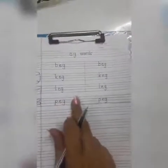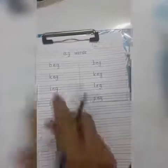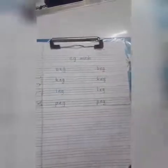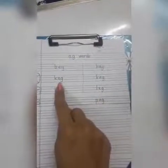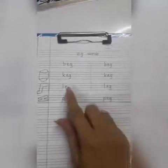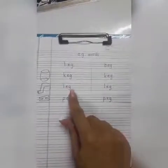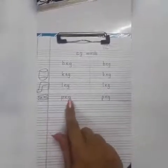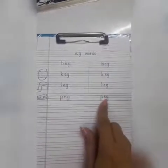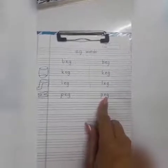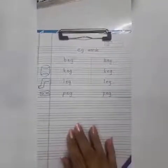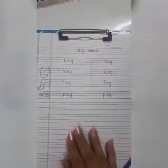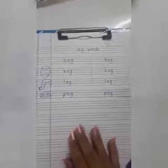Now again we read all the words. B-Egg-Beg. K-Egg-Keg. L-Egg-Leg. P-Egg-Peg. Now you know the egg words family — the reading and the writing part both. Thank you.